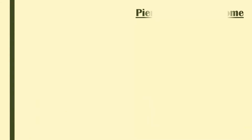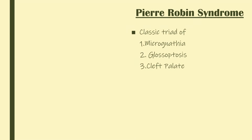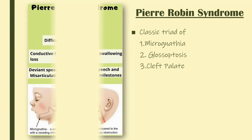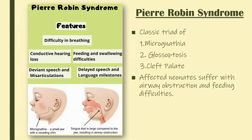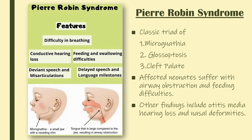The Pierre Robin Syndrome is a classic triad of micrognathia, glossoptosis, and cleft palate. The affected neonates suffer with airway obstruction and feeding difficulties. Other findings include otitis media, hearing loss, and nasal deformities.